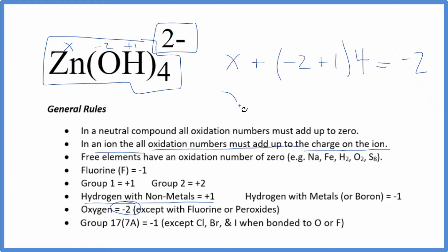Now we can just solve for x. x plus we have this minus 1 here times 4, so minus 4. That'll equal this minus 2. We'll add 4 to both sides.